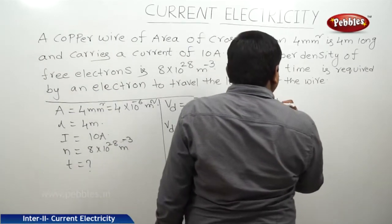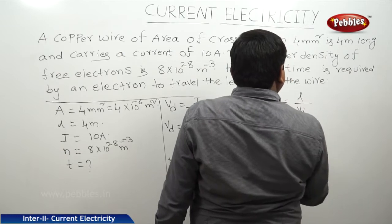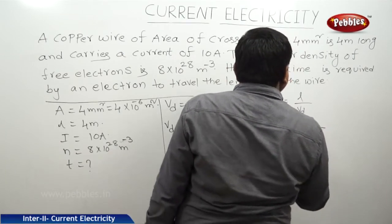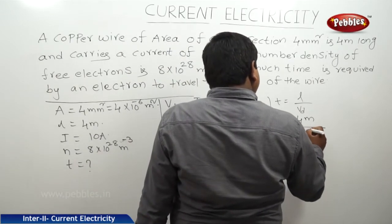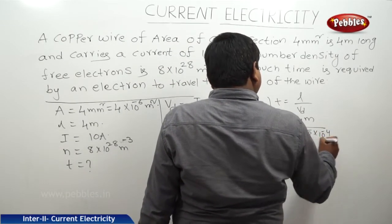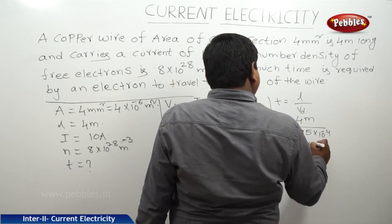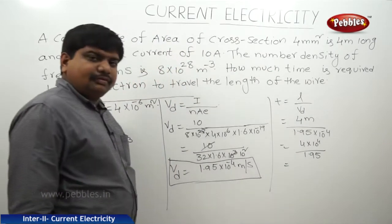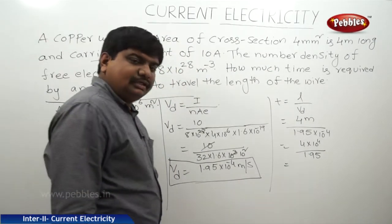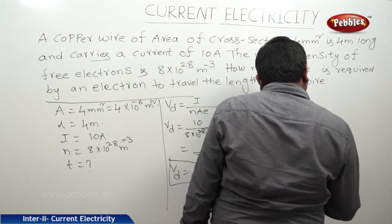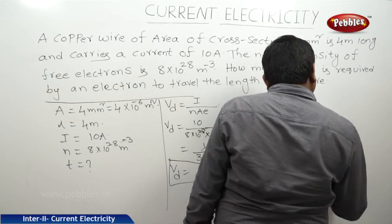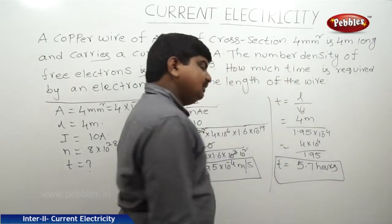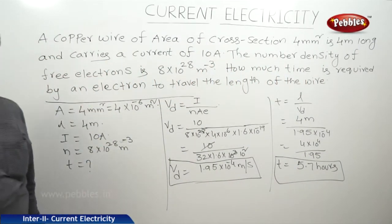Therefore, time equals L divided by Vd. The length of the wire is 4 meters and Vd is 1.95 into 10 to the power of minus 4. So time equals 4 into 10 to the power of 4 divided by 1.95, giving approximately 5.7 hours. This is the time taken for electrons to travel through this length of wire.